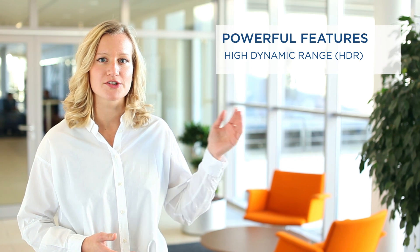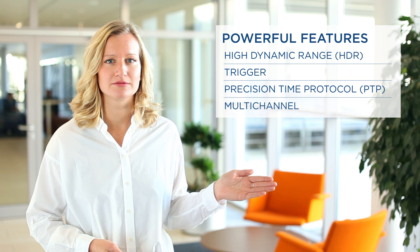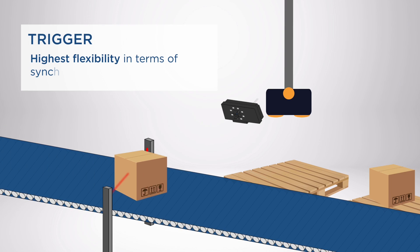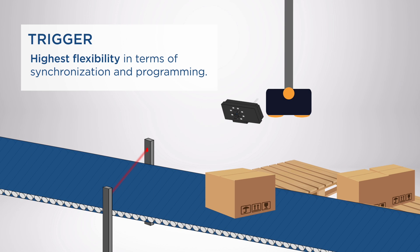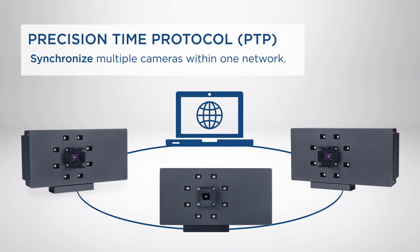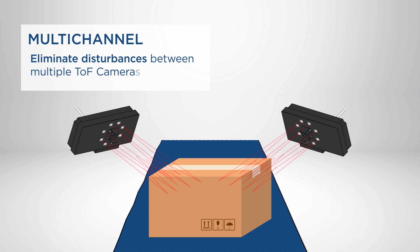The Basler TOF camera offers a broad variety of powerful features like high dynamic range, trigger, precision time protocol, and multi-channel. HDR helps you to capture a scene with objects of different reflectivity and helps to avoid over and under saturation. The camera offers both software and hardware trigger for highest flexibility in synchronization and programming your application. The precision time protocol (PTP) lets you synchronize multiple cameras within one network, and even synchronization with a 2D camera is easy as long as it also offers PTP. Using multiple TOF cameras is always a challenge because the light pulses disturb each other and compromise measurement data — to eliminate this problem you can use either trigger or the multi-channel feature.